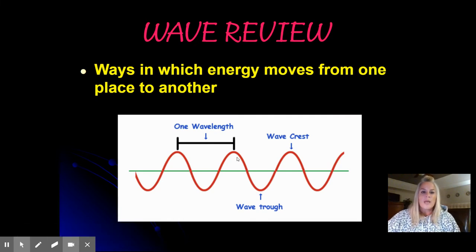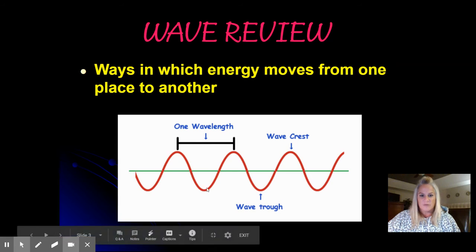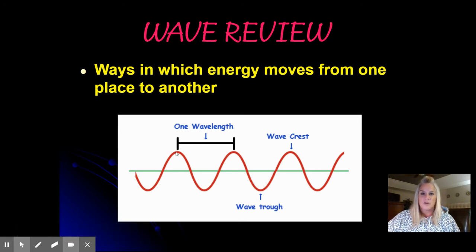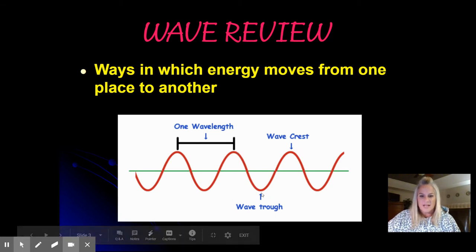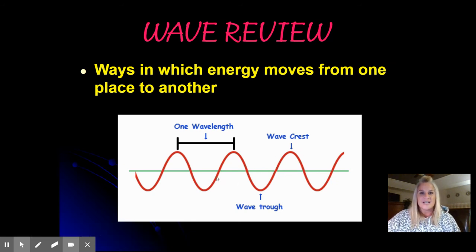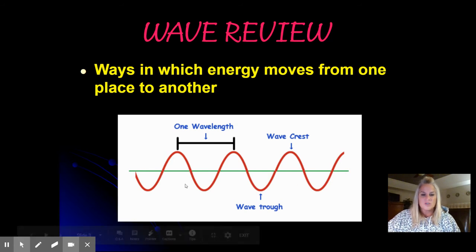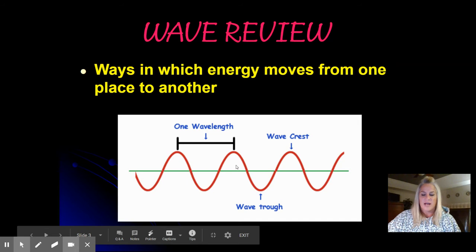A little wave review: waves are defined as ways that energy moves from one place to another. Here's a picture of a wave. You've got one wavelength measured from the top of one crest to the top of the next. A trough is defined as the point below the midline, and the crest is the point above the midline. I did ask you in your notes to make a quick sketch of a wave and draw what one wavelength represents.